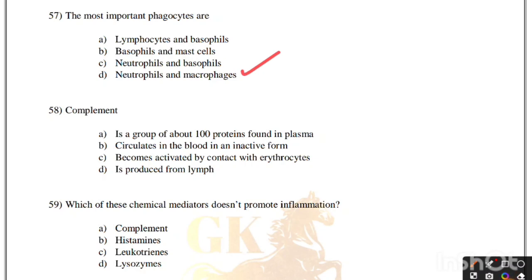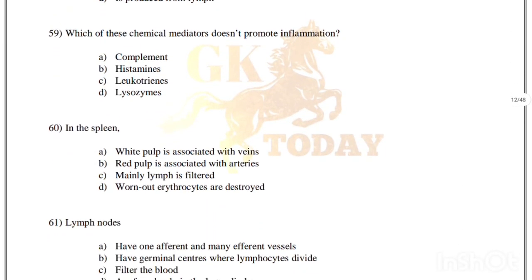Complement circulates in the blood in an inactive form — option B. Which of these chemical mediators does not promote inflammation? Complement, histamines, leukotrienes, or lysosomes. Correct answer is option D, lysosomes.